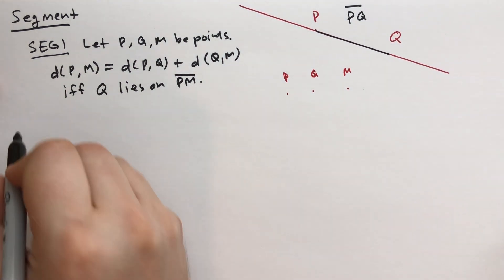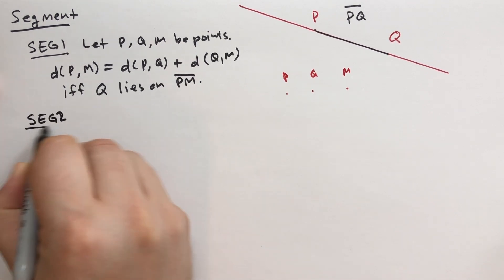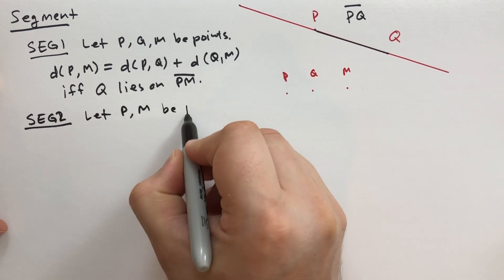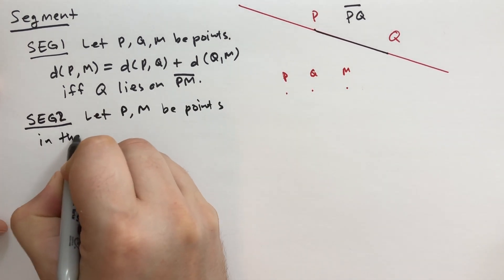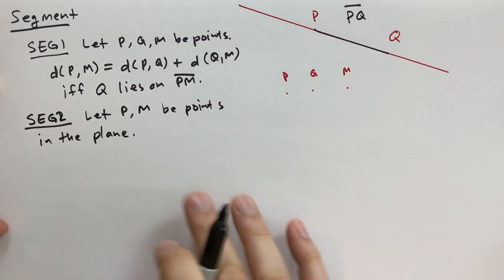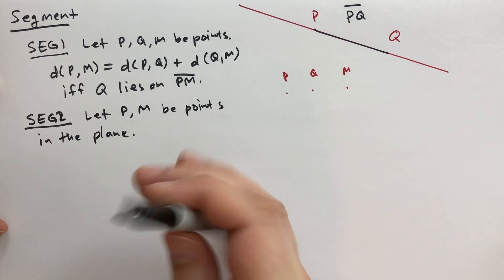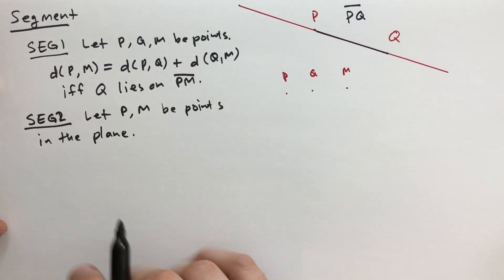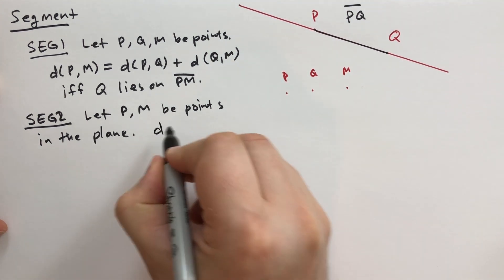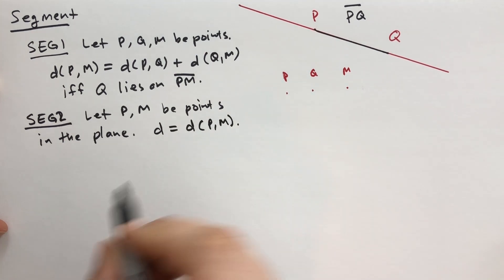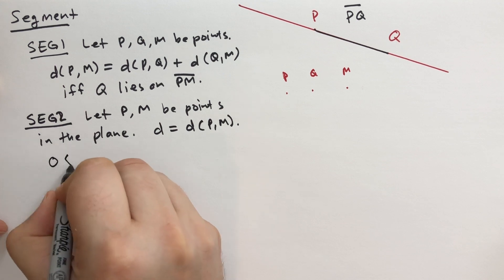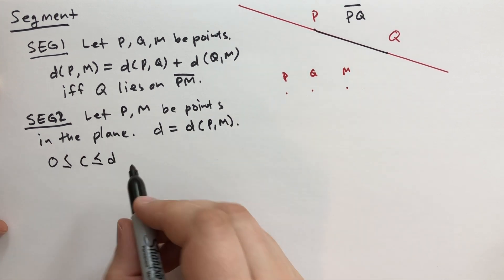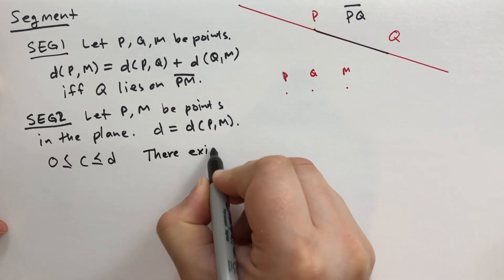There's a second fact. This one's a little bit more complicated to understand. Once you get it though, it's not that hard. Seg2. It says let P and M be points in the plane. What's a plane? That's like this flat sheet, this two-dimensional flat sheet of paper where you can go up, down, left, right, but you can't leave the page. You can't go vertical or descend to vertical. So then we say if C, or we have the distance D, we say D is equal to the distance between P and M. And we say C is equal to zero, equal to D, or between zero and D.